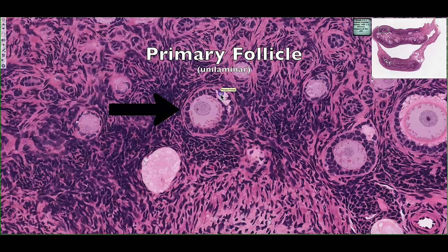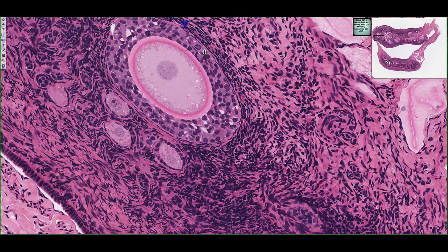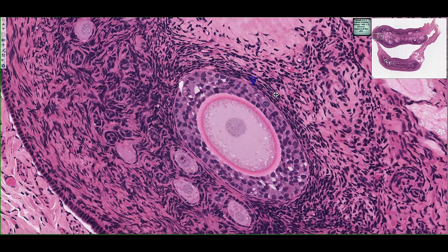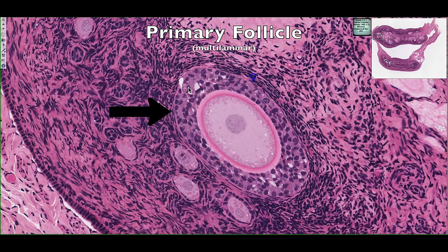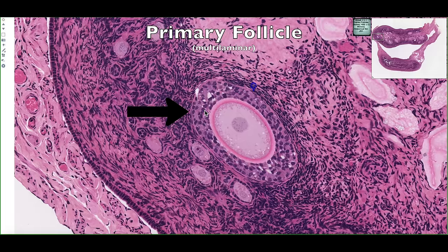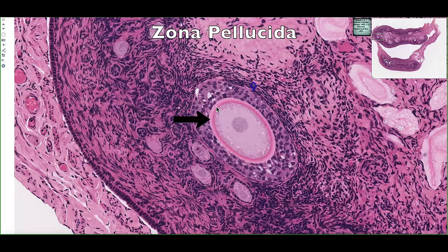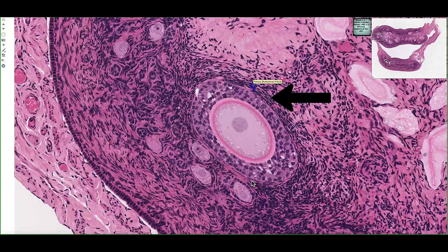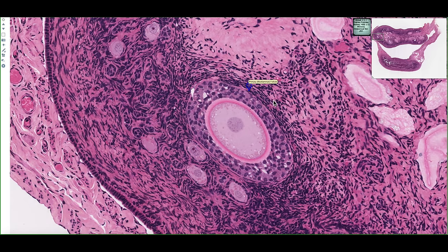Eventually, this primary follicle is going to develop multiple layers of these follicular cells. If we look at a multilaminar primary follicle, we can see that it has multiple layers of these cells. These cells are no longer called follicular cells — they're called granulosal cells, forming a layer called the stratum granulosum. Here we can see the oocyte with its nucleus, and separating the oocyte from the granulosal cells is a dense glycoprotein-rich structure called the zona pellucida. Surrounding the multilaminar follicle, layers of stromal cells begin to surround and become more developed, becoming more prominent as we look at a secondary follicle.